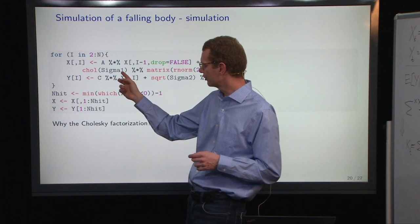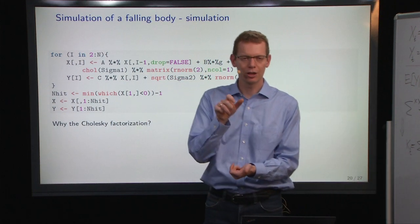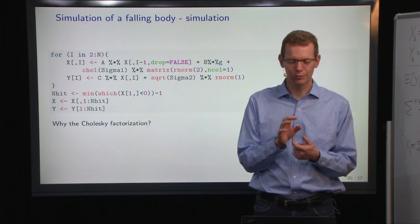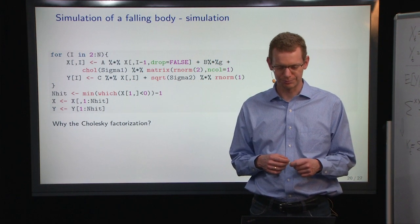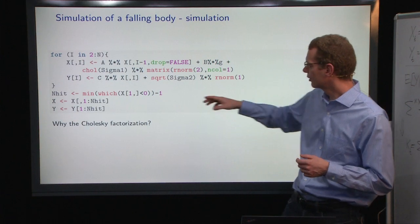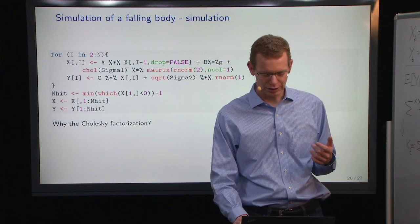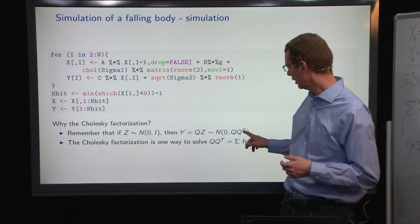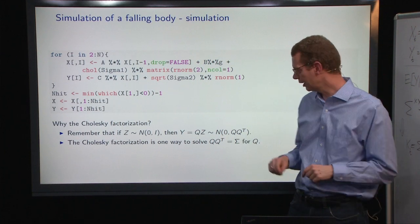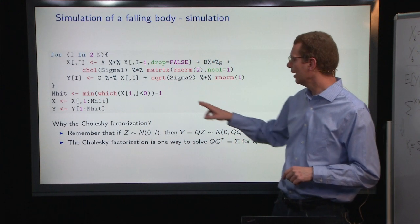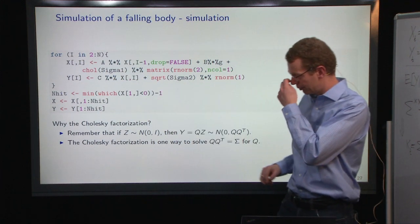I'll do the Cholesky factorization of my covariance matrix and multiply that on a column vector with two random standard normal numbers. Basically, the Cholesky factorization is what we need to get something that has a covariance matrix. We need to find something that can work as a multivariate standard deviation.